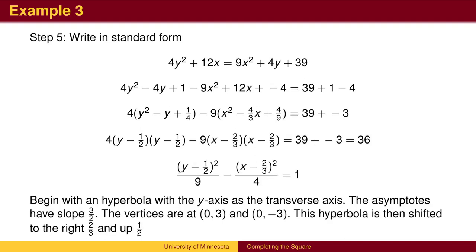This is a shifted hyperbola. Start with a hyperbola with the transverse axis on the y-axis. The asymptote box goes up 3 and over 2, so the asymptotes have slope plus and minus 3 halves.